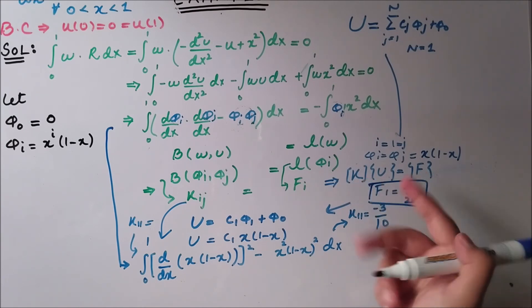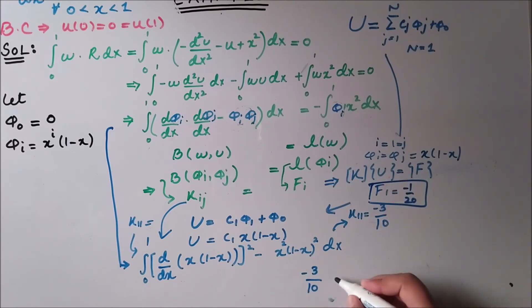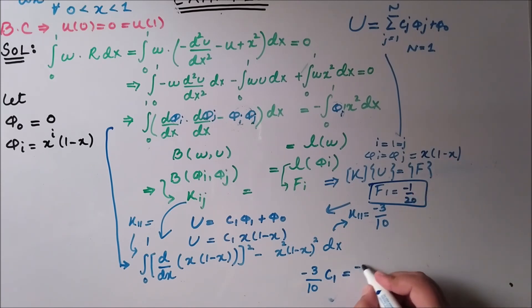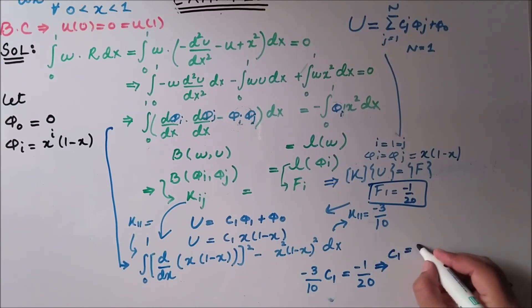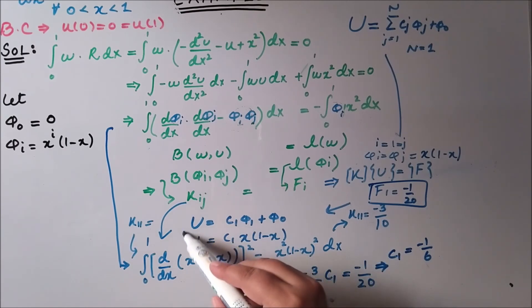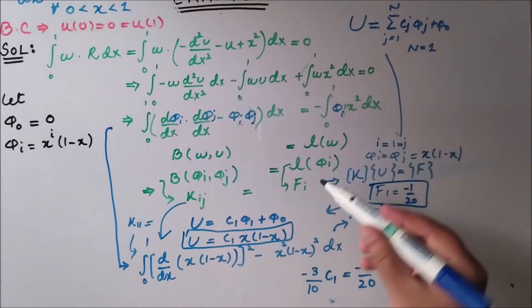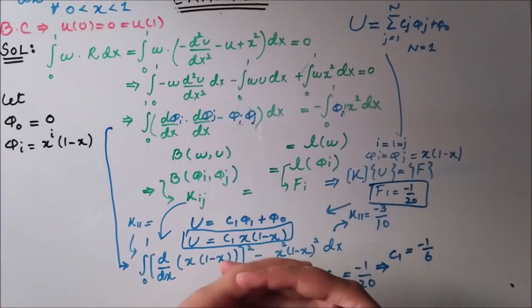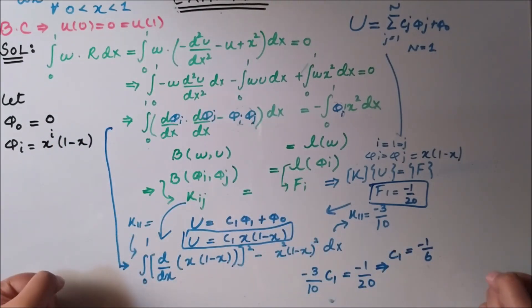Using the relation K · c = f, we write (−3/10) · c_1 = −1/20, which gives c_1 = 1/6. Plugging c_1 = 1/6 back in, we obtain the approximate solution of the given differential equation. This shows how we can solve any differential equation with a given domain and boundary conditions to find the approximate solution using the Ritz method or weak form.